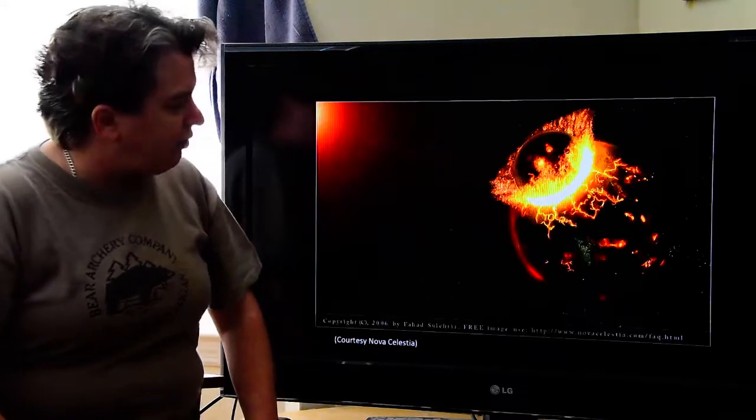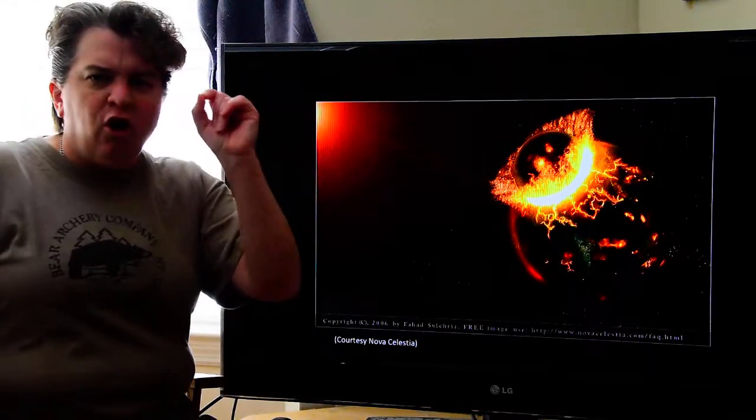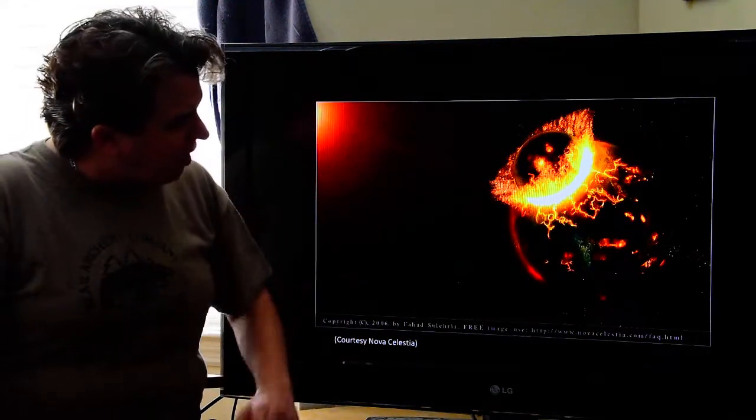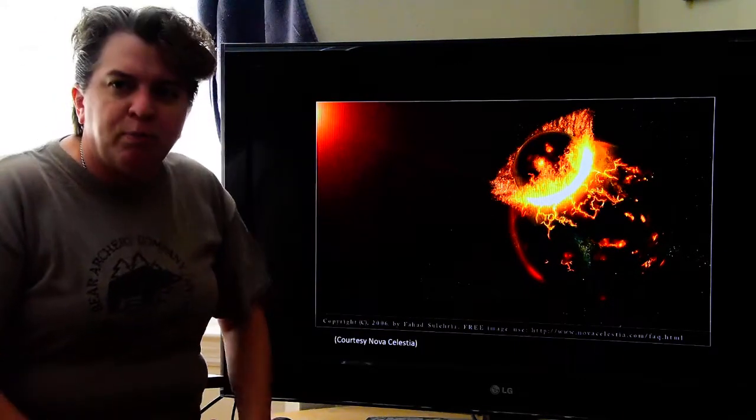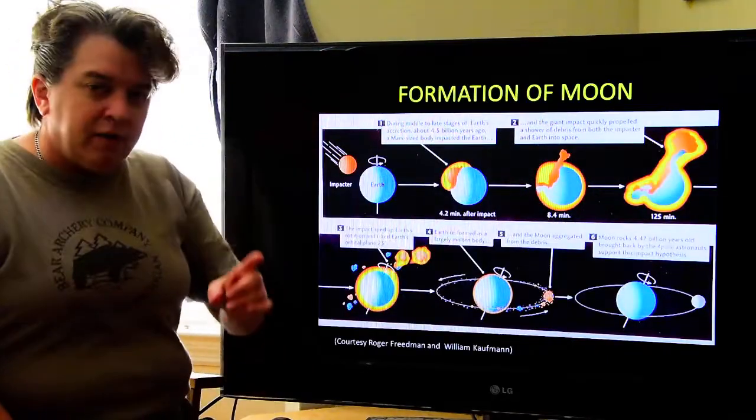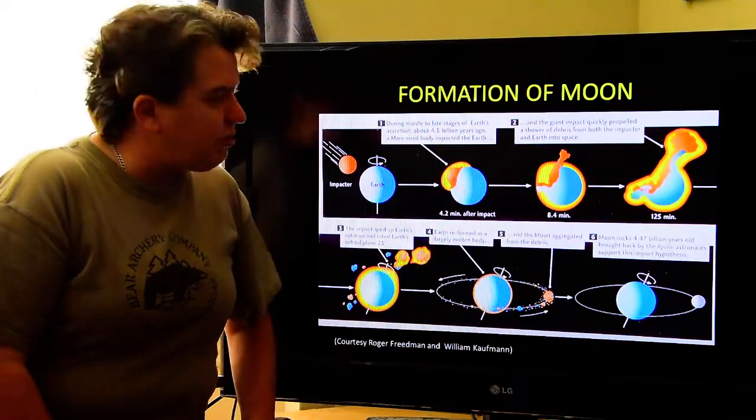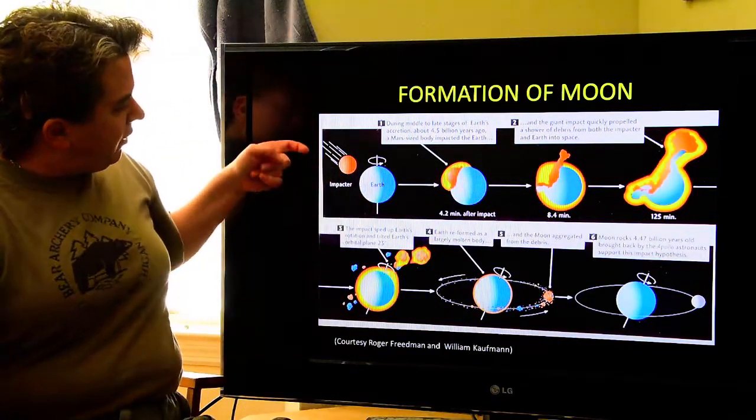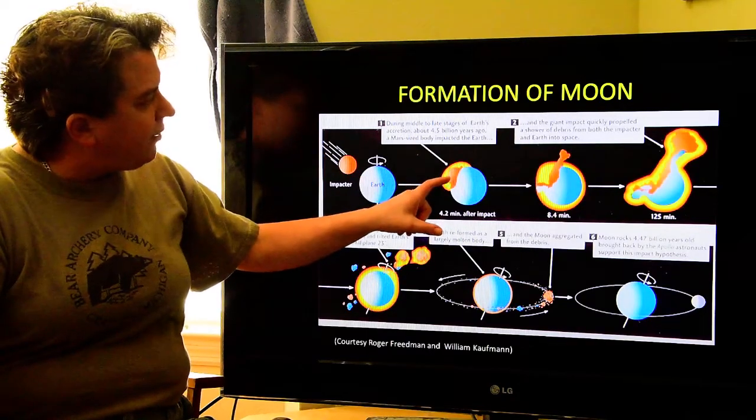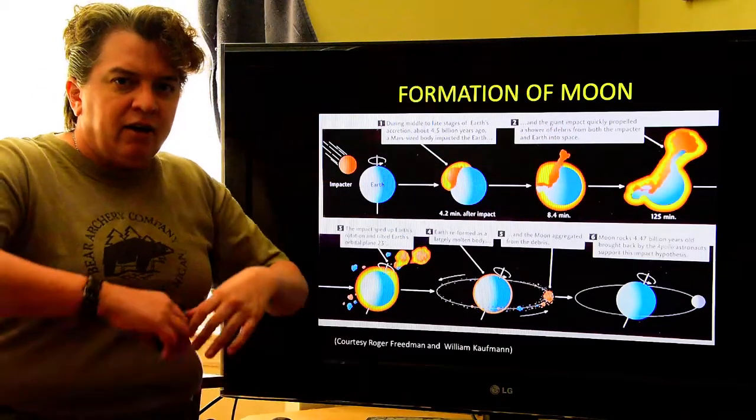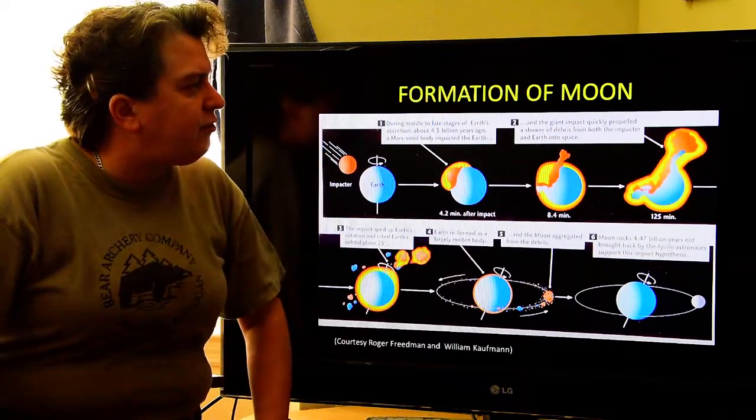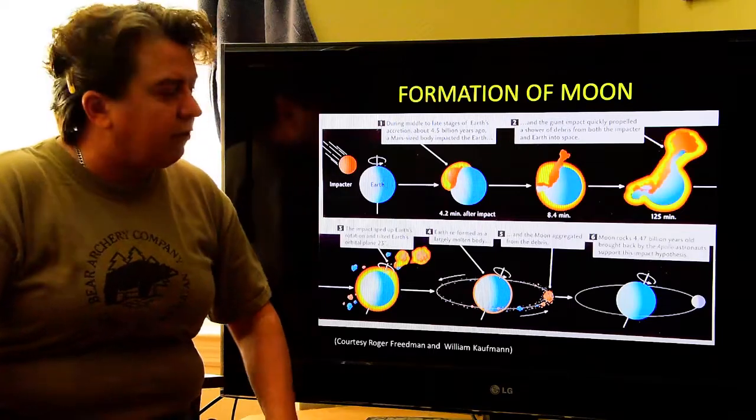But early on in Earth history, this happens. A Mars-sized object hit the planet. And this significantly changed Earth. So, what we're seeing here, here's our Mars-sized object. It hits the planet. And this, it says, propelled a bunch of debris into orbit around Earth.